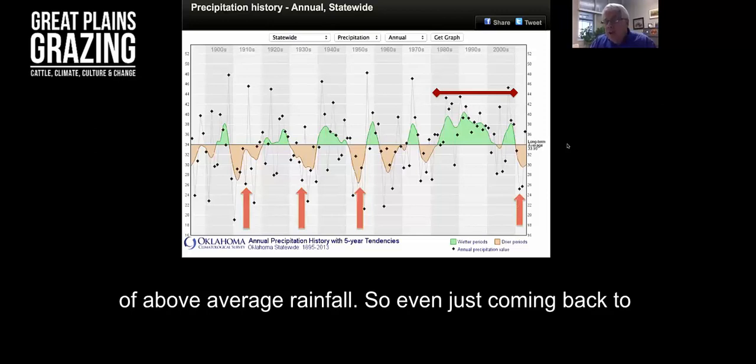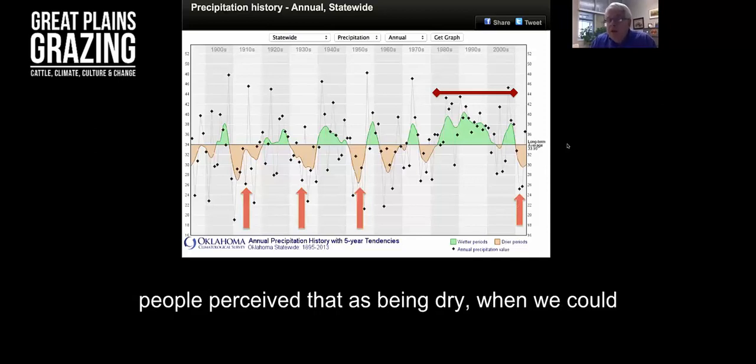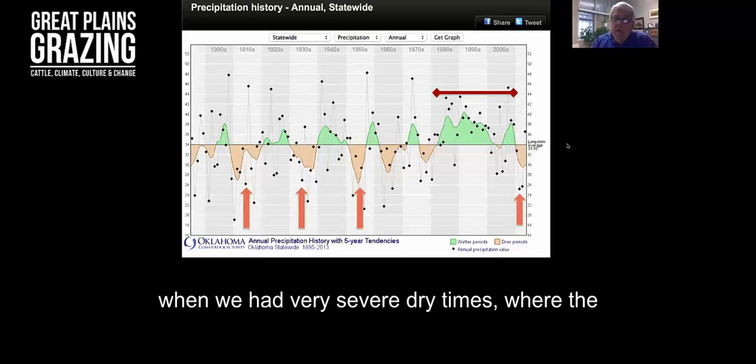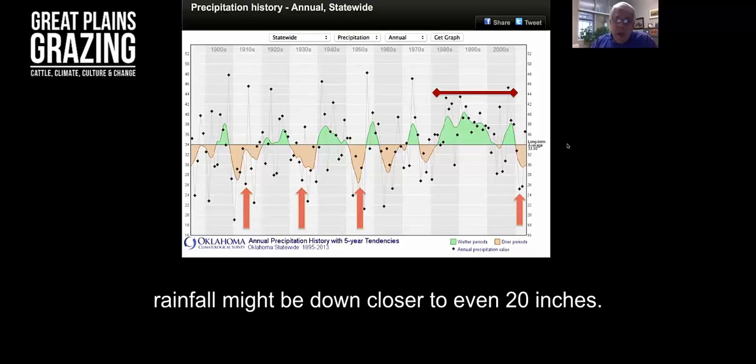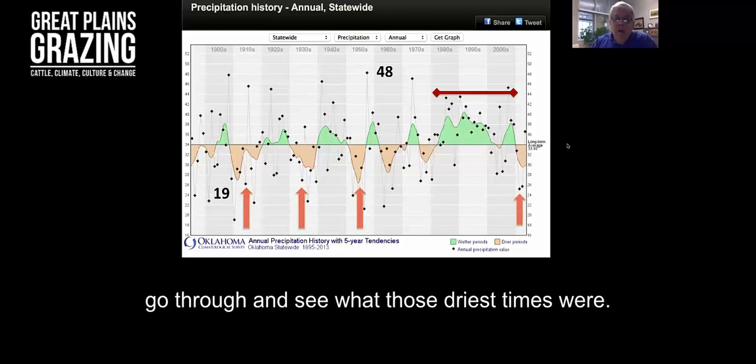Even just coming back to the long-term average of close to 34 inches, people perceived that as being dry when we could see through the climate record that really there were those periods when we had very severe dry times where the rainfall might be down closer to even 20 inches. That's one of the things that we get from this chart—we can go through and see what those driest times were.